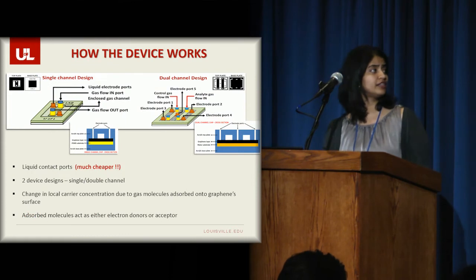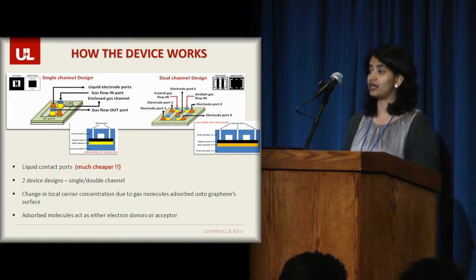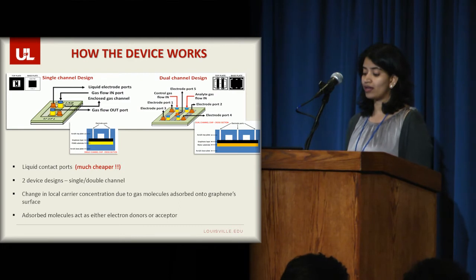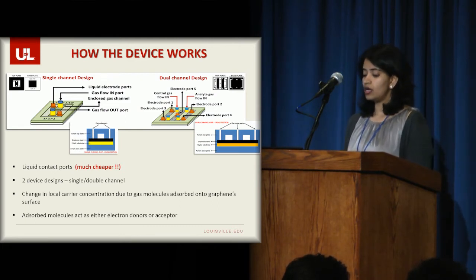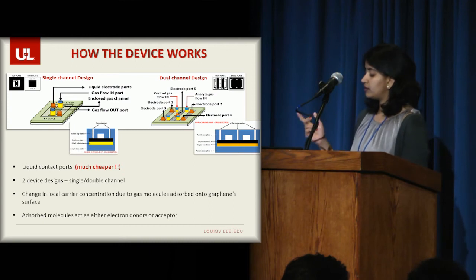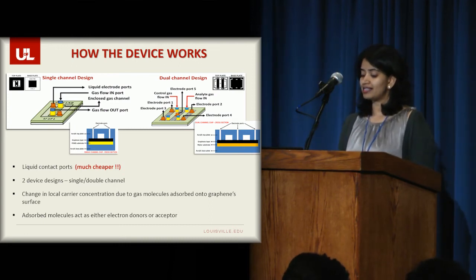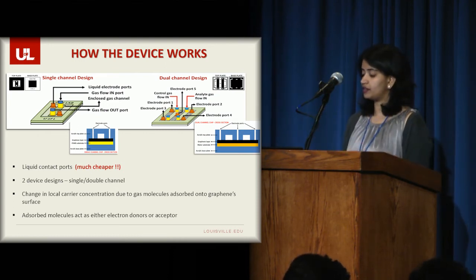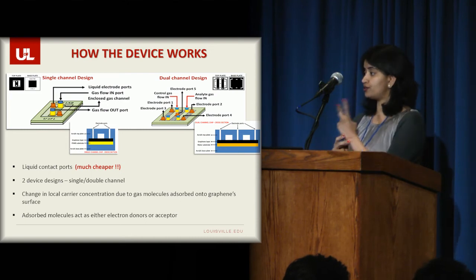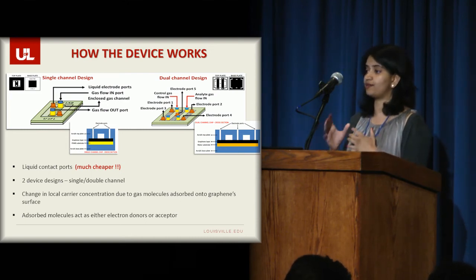This slide here shows the schematics for the devices that we've designed. There are two different devices. One is a single channel design and the other is a dual channel design. From the schematic, there's an inset which shows the cross-sectional view of the device. For the single channel, you have one single gas channel that traverses the length of the graphene layer. And for the dual channel, we have two different gas channels, one for the control gas and one for the analyte gas that we want to test.